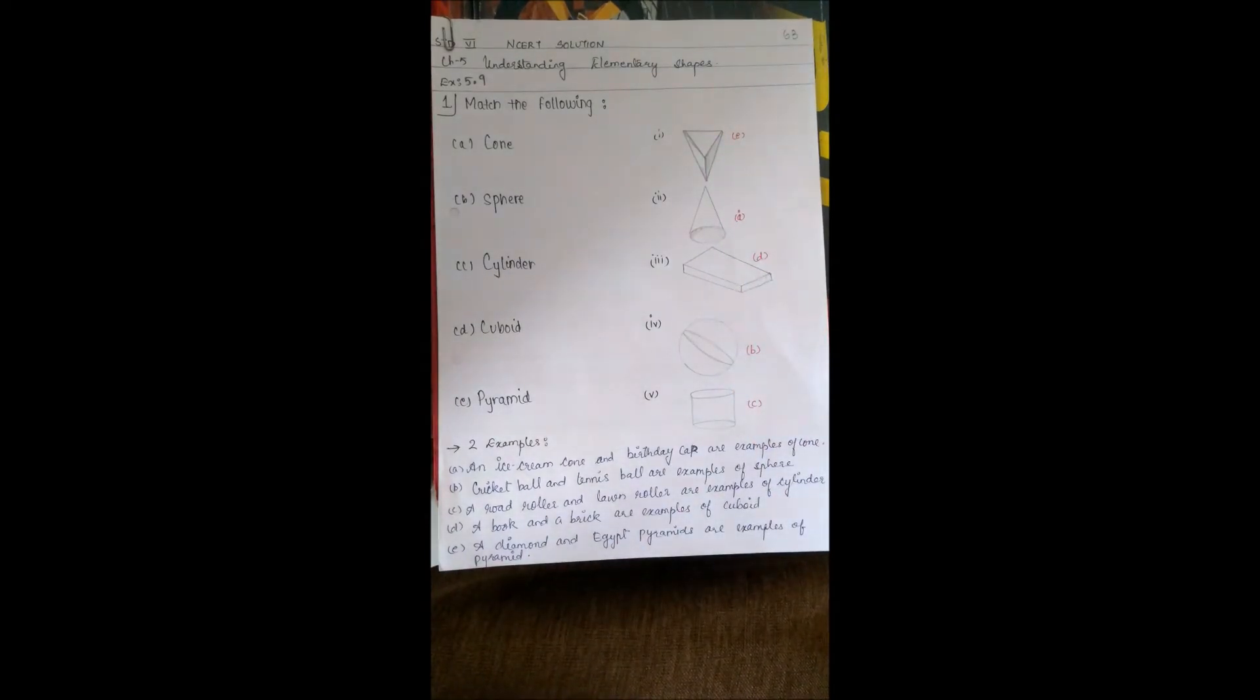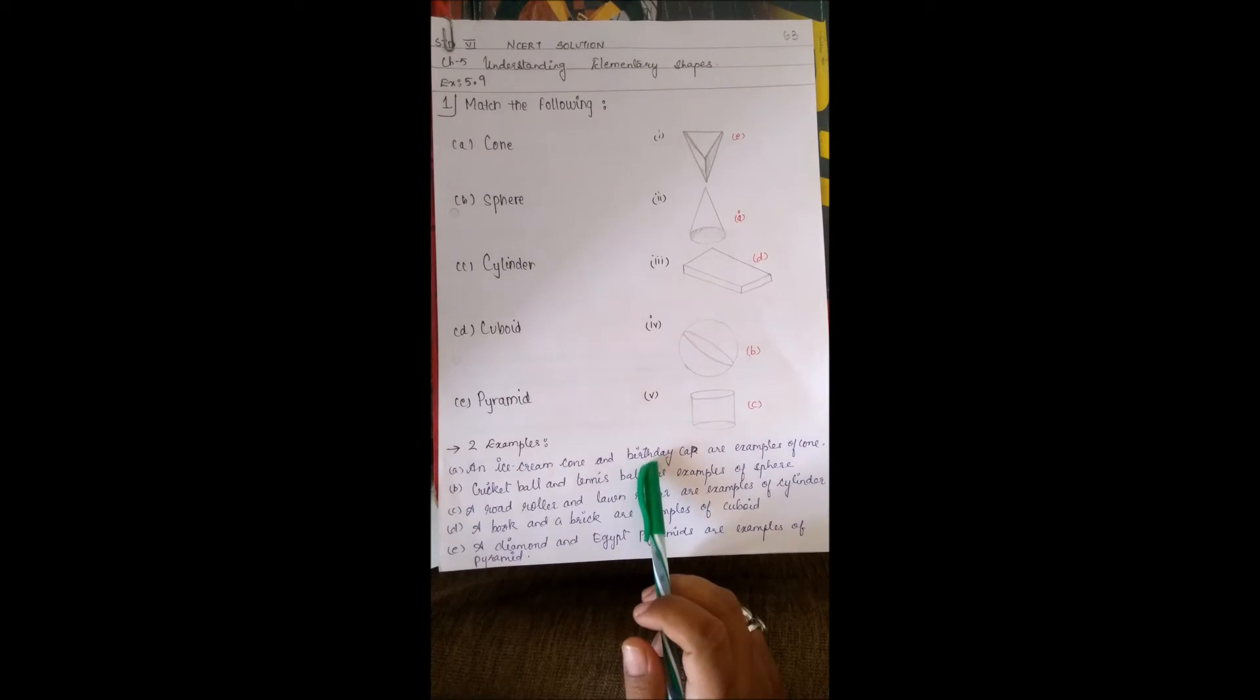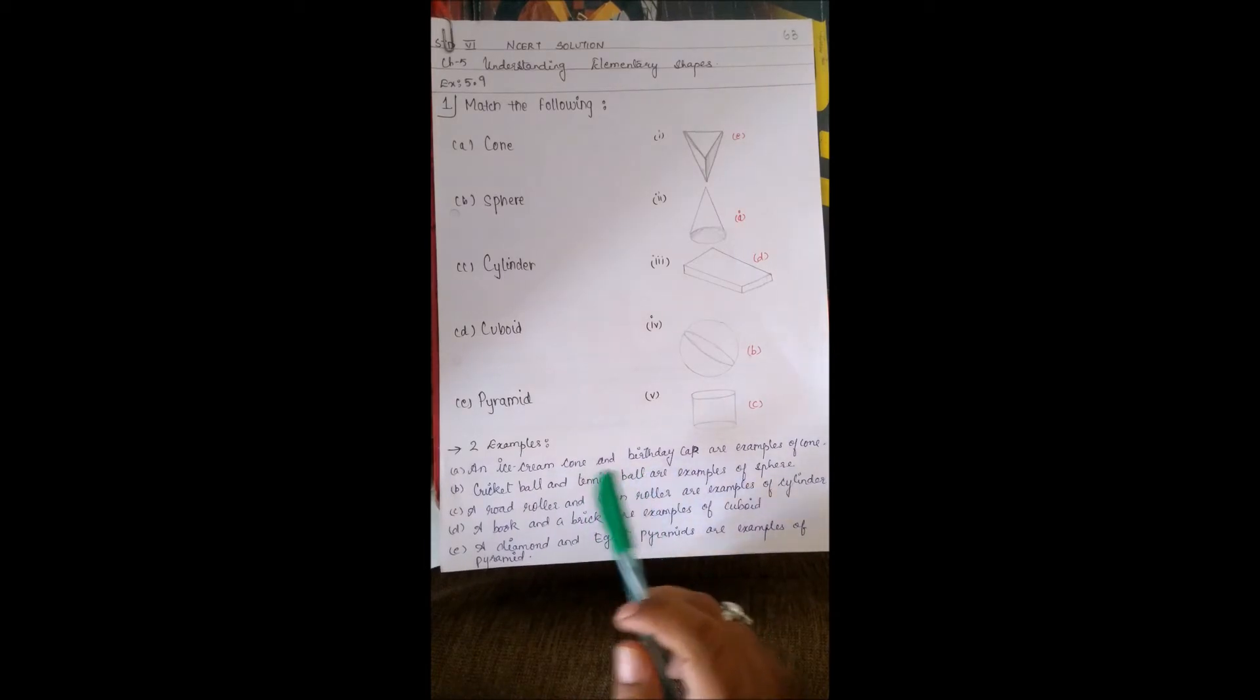examples of each. First one is cone. Examples of a cone: an ice cream cone and a birthday cap. Second one is sphere. Examples: cricket ball and tennis ball. Third one is cylinder. Examples: a